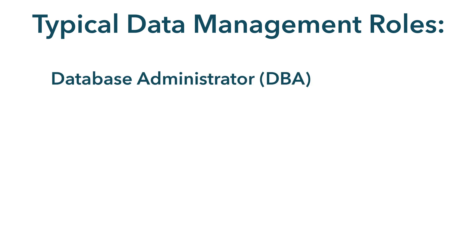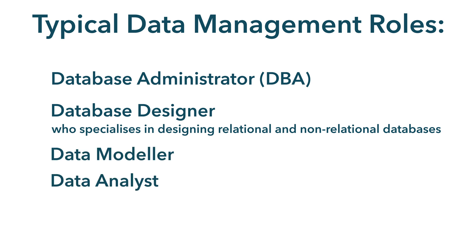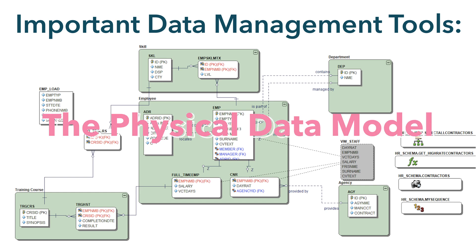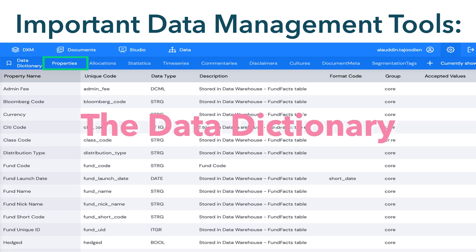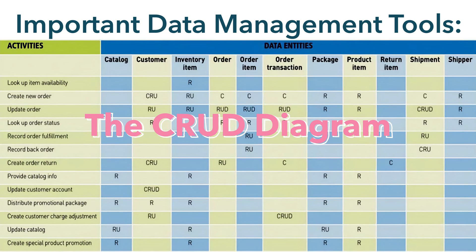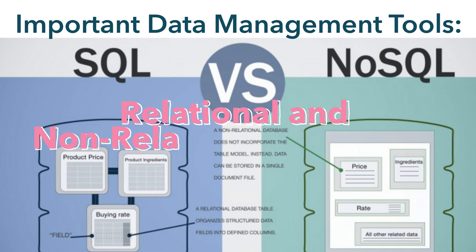The key data management role is a database administrator, who is often supported by the database designer, who specializes in designing relational and non-relational databases, the data modeler, the data analyst, and the BI analyst. Some of the important tools include: the physical data model, which shows data tables and their relationships to other data tables; the data dictionary, which stores the columns that define tables; the data flow diagram, which shows how data and processes interact; the CRUD diagram, which connects tables, columns and processes and shows how functions and processes view, create, update and delete data — notably extending the logical CRUD to also show physical data mapping; and relational and non-relational databases.